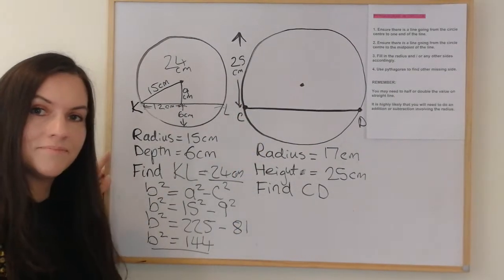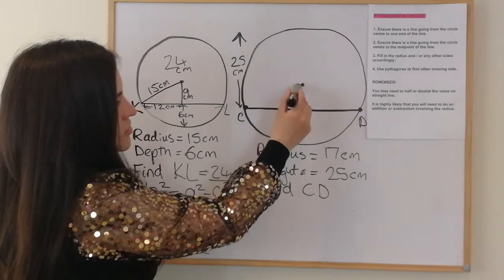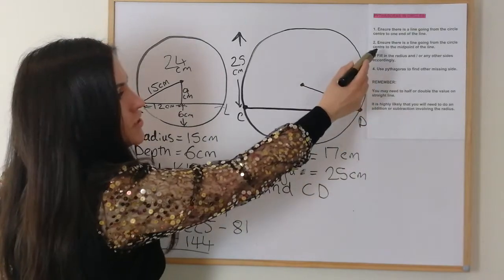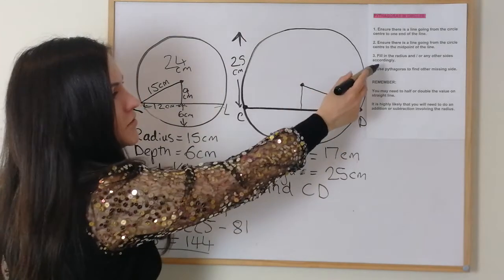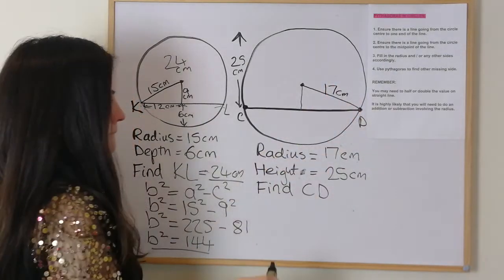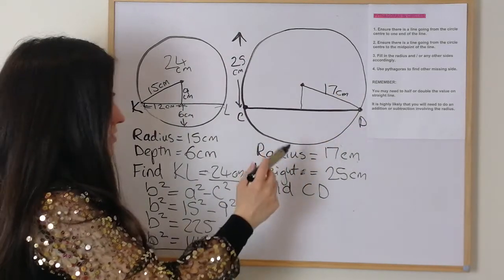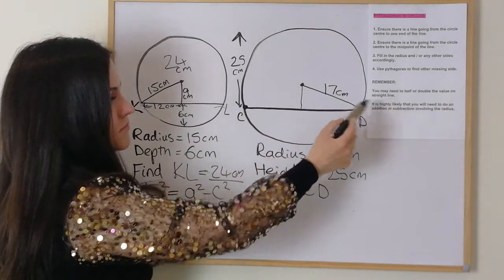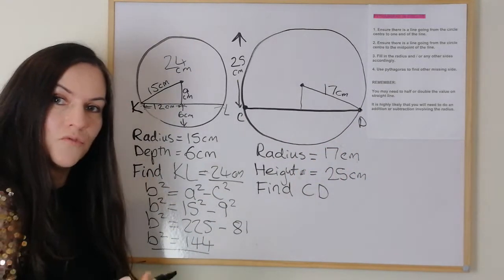For this next example, step one: ensure there's a line from the circle centre to one end of the line. Step two: ensure there's a line from the circle centre to the midpoint. Step three: fill in the radius and/or any other sides — the radius is 17 centimetres, and we know the entire height is 25. We only have that one side and don't have anything on the bottom yet. It's highly likely we'll need to do an addition or subtraction involving the radius.